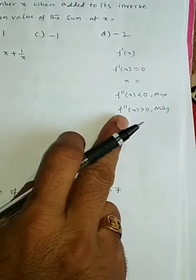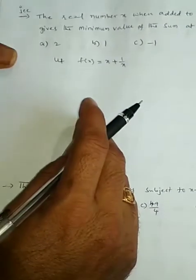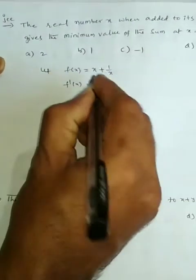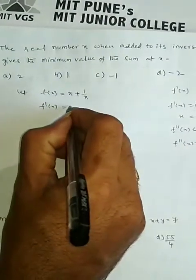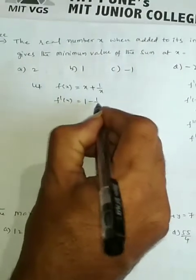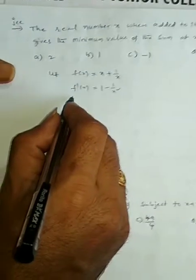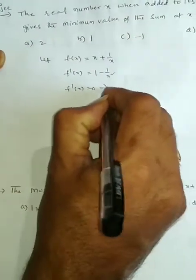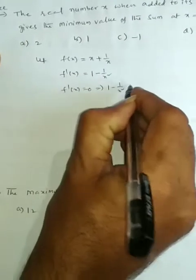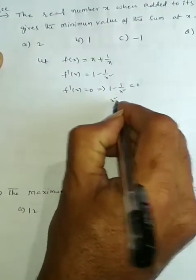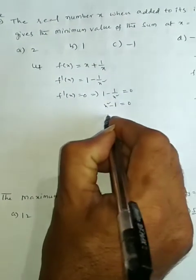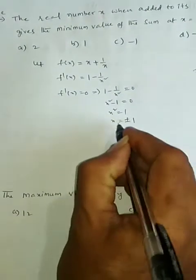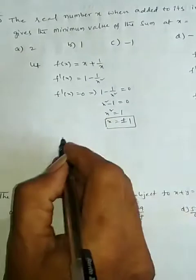Based on this concept, you can find the x value. So now to find f'(x): f'(x) is equal to derivative of x which is 1, and derivative of 1 by x is minus 1 by x². Making f'(x) equal to 0, that implies 1 minus 1 by x² is equal to 0, so x² minus 1 is equal to 0, x² is equal to 1, and x is equal to plus or minus 1.